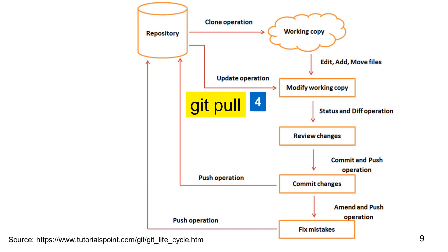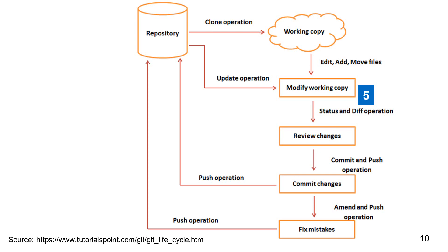One reason is that you work in a team and someone else has made changes. Another reason is that you have several computers. Maybe you have a computer in your office and another computer at home. You want to make sure your local copy is up to date. The command is git pull. This command pulls the changes in the repository.